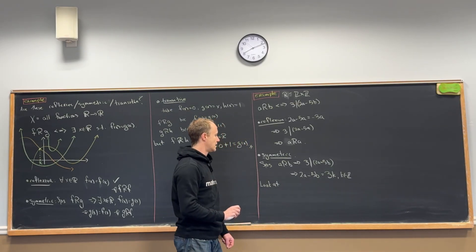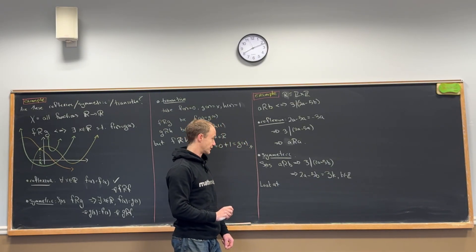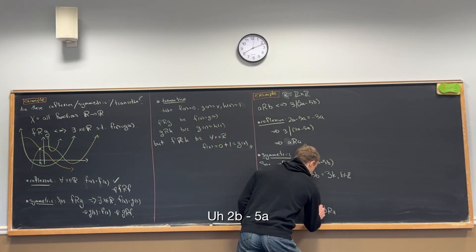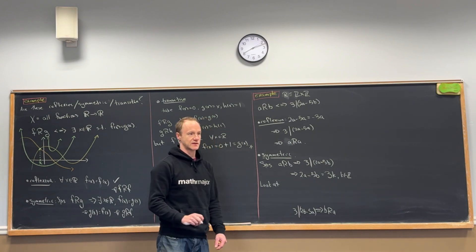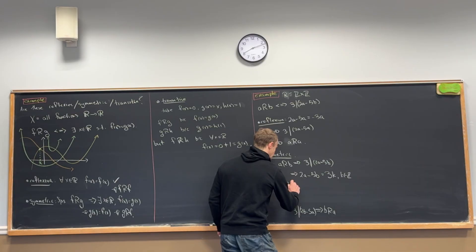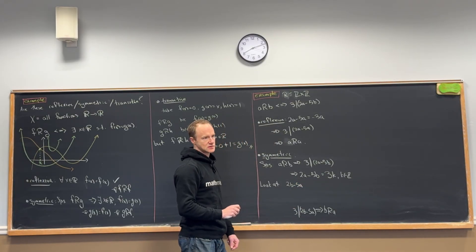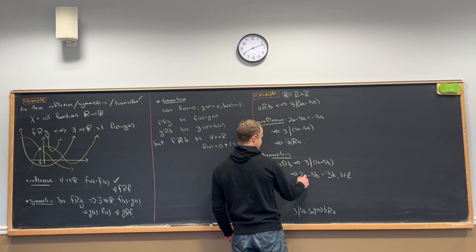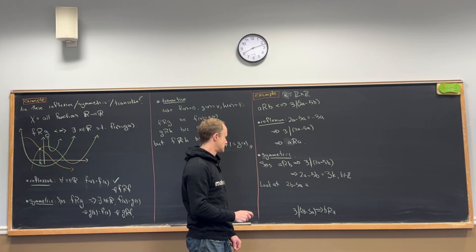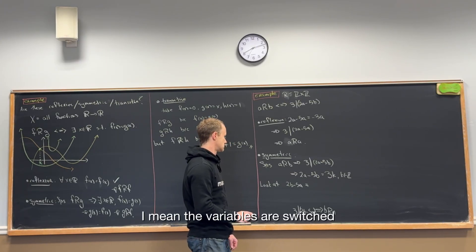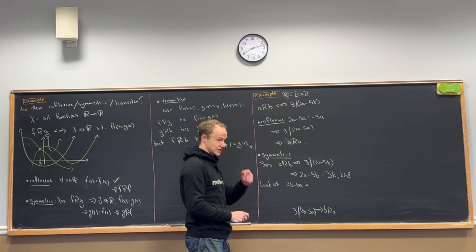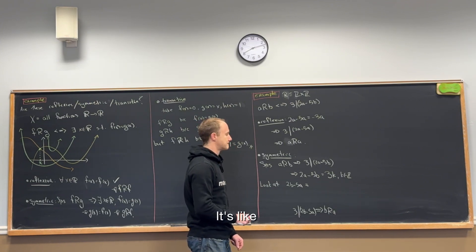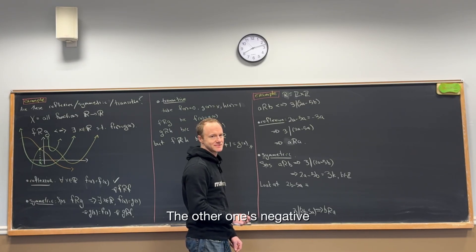What's the shape of the object that we want to show as a multiple of 3 if we have B R A? We need 3 divides 2B minus 5A. So we're going to look at 2B minus 5A. But how does that differ from 2A minus 5B? The variables are switched, and the other one is negative.